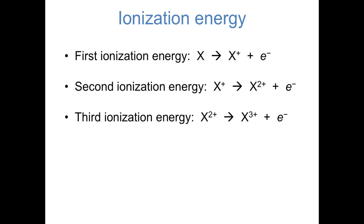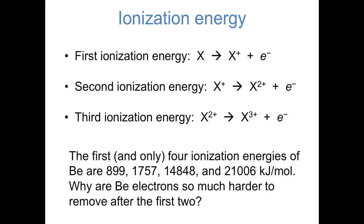Just as the first ionization energy is the energy required to eject the first electron from a neutral atom, the second and third ionization energies are the energies required to kick out the second and third electrons. For example, the four ionization energies of beryllium are successively about 900, 1800, 15,000, and 21,000 kJ per mole. The first and second electrons are kicked out of the 2s orbital, but after that the remaining electrons have to come out of the much lower energy 1s orbital, which is far more difficult.